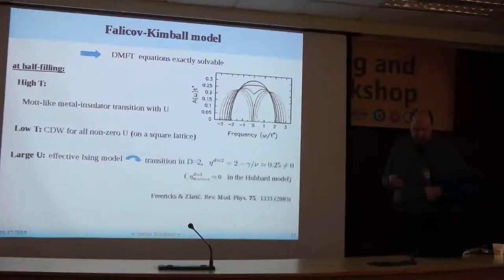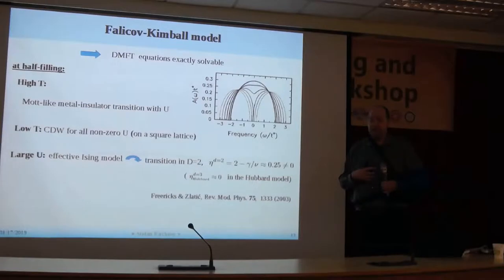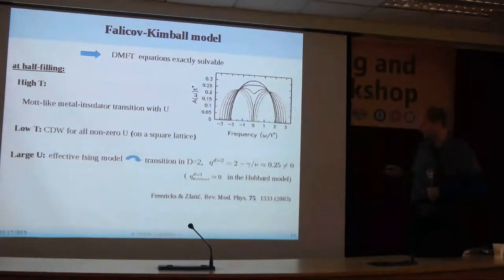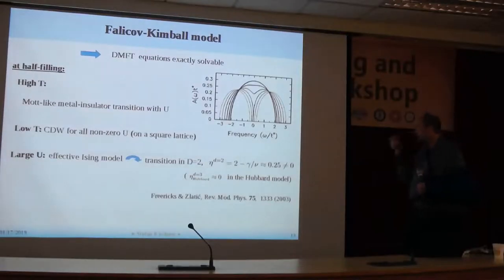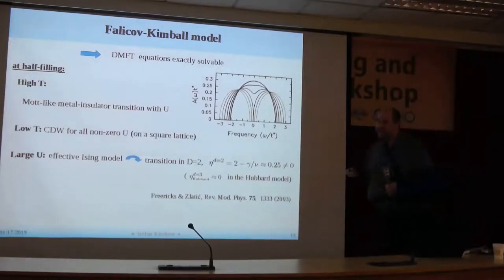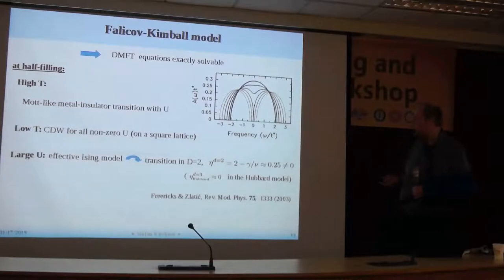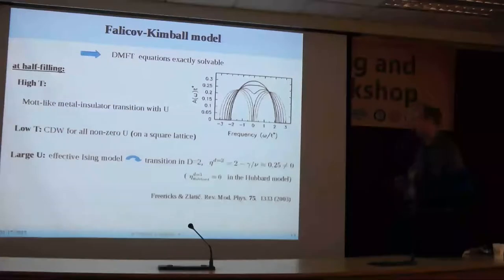One of the nice features of the model is that DMFT, at least on the Bethe lattice, is exactly solvable. For that reason, it has been used in many cases in the 1990s to test the DMFT and to describe the metal-insulator transition within the DMFT. At high temperatures, the model shows something like a metal-insulator transition within DMFT as you increase U, and at low temperatures you find charge order — a charge density wave on the square lattice for all non-zero values of the Coulomb repulsion.